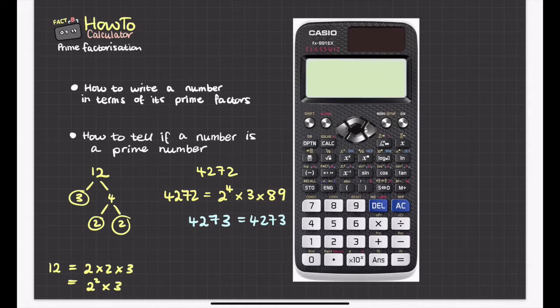And you can try this on a few other prime numbers if you want. If you type in the number 29, say. And then you do the same thing again. Shift. And then fact. It says 29.